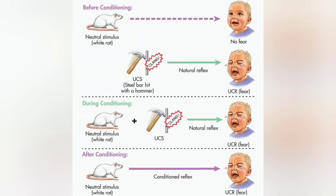Another example is the Little Albert experiment. The unconditioned stimulus was the banging of a hammer on a metal bar, and the unconditioned response was Little Albert crying because of the noise. The conditioned stimulus was the seeing and touching of the rat. The conditioned response was that Albert manifested fear of rats.